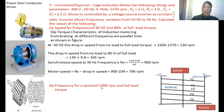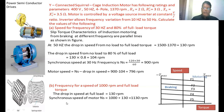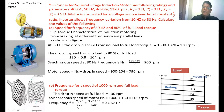For the second part, we find the frequency corresponding to a motor speed of 1000 RPM at full load. The drop in speed at full load is 130 RPM. So synchronous speed = 1000 + 130 = 1130 RPM. Using NS = 120f/P and substituting all known values, we calculate the frequency as f = 37.67 Hz.